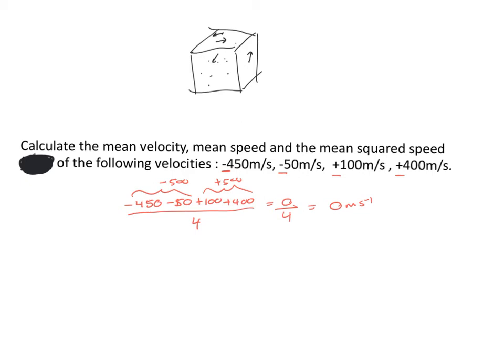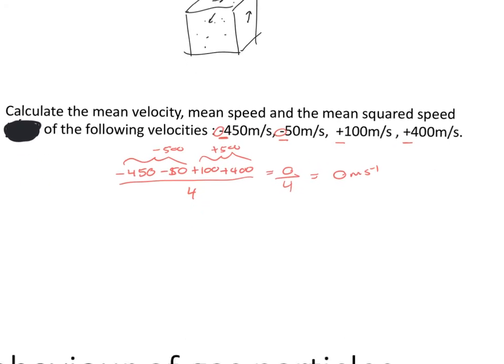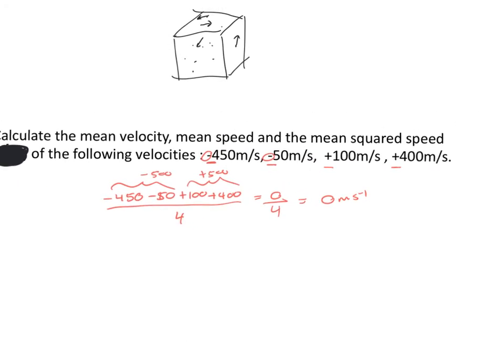If I consider speeds instead — ignoring direction — I might get 450 + 50 + 100 + 400 divided by 4, giving 250 meters per second. But that doesn't give us the ideal value. What we actually want to calculate is the mean squared speed.